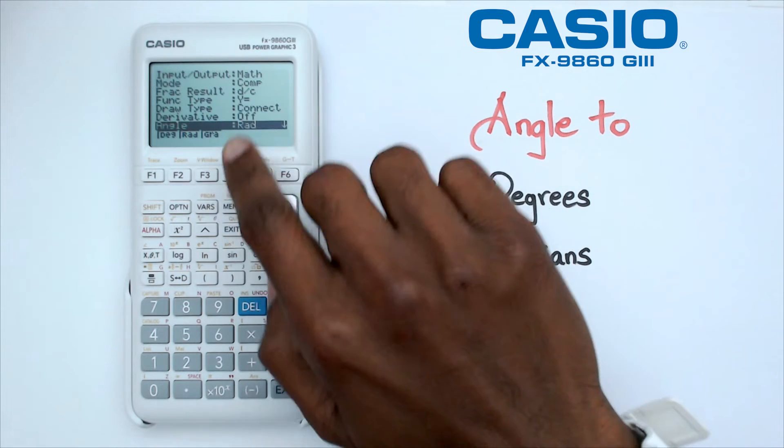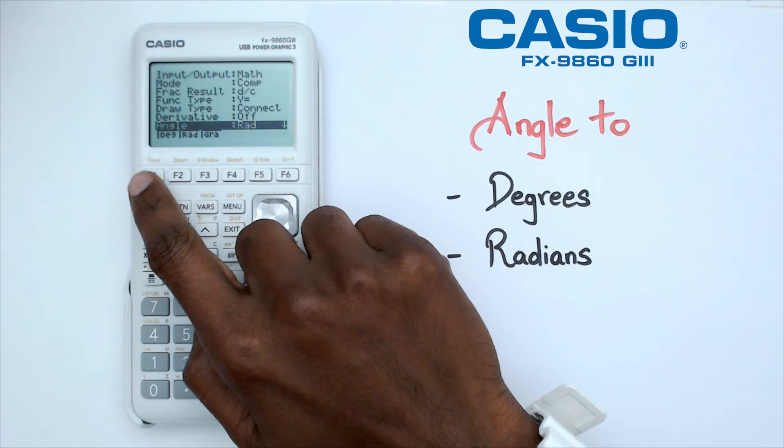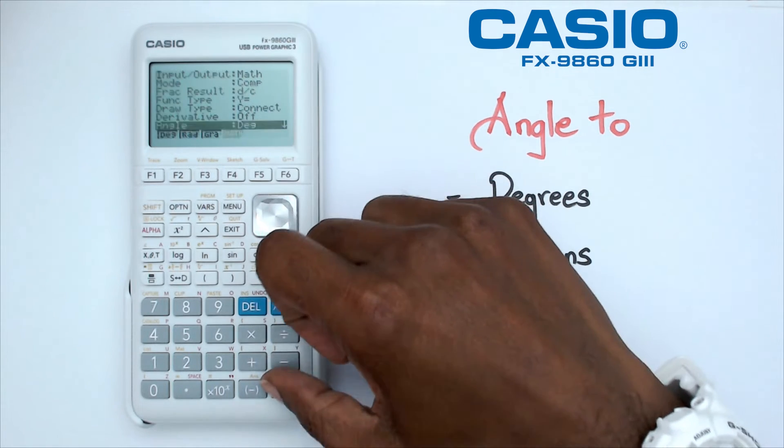So we're going to change this from radians to degrees. And to change it to degrees, we're going to click on F1. And that's basically it.